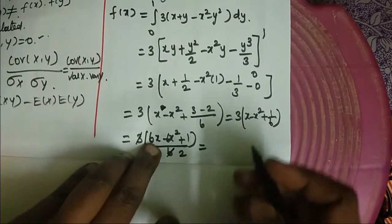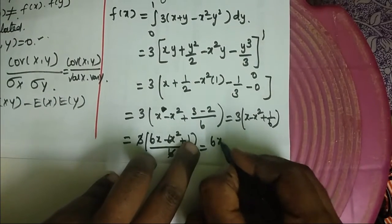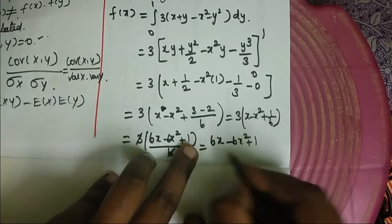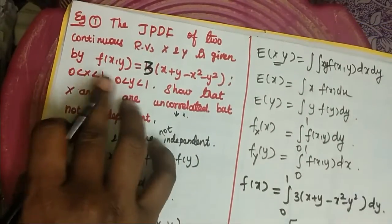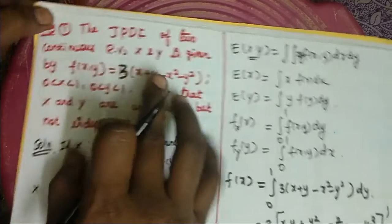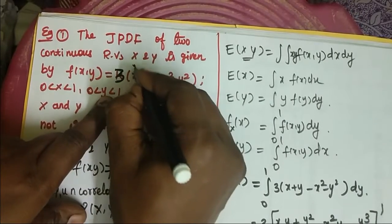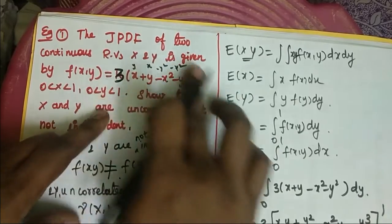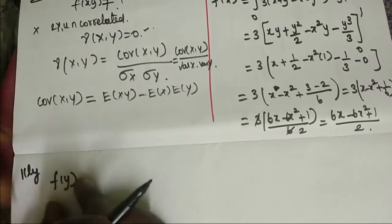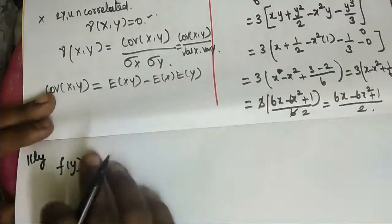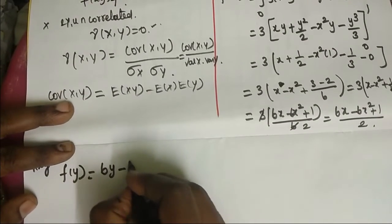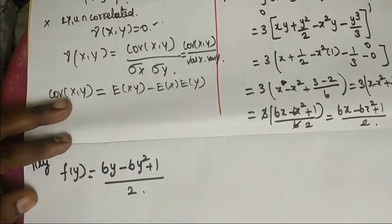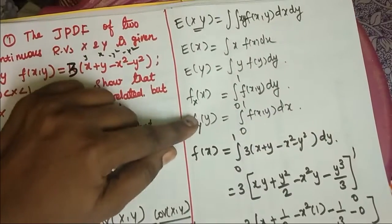So f(x) = (6x − 6x² + 1)/2. Similarly, by replacing x with y, f(y) = (6y − 6y² + 1)/2. Since the problem is symmetric in x and y, E(x) equals E(y). The formula for E(x) is the integral of x·f(x) dx from 0 to 1.